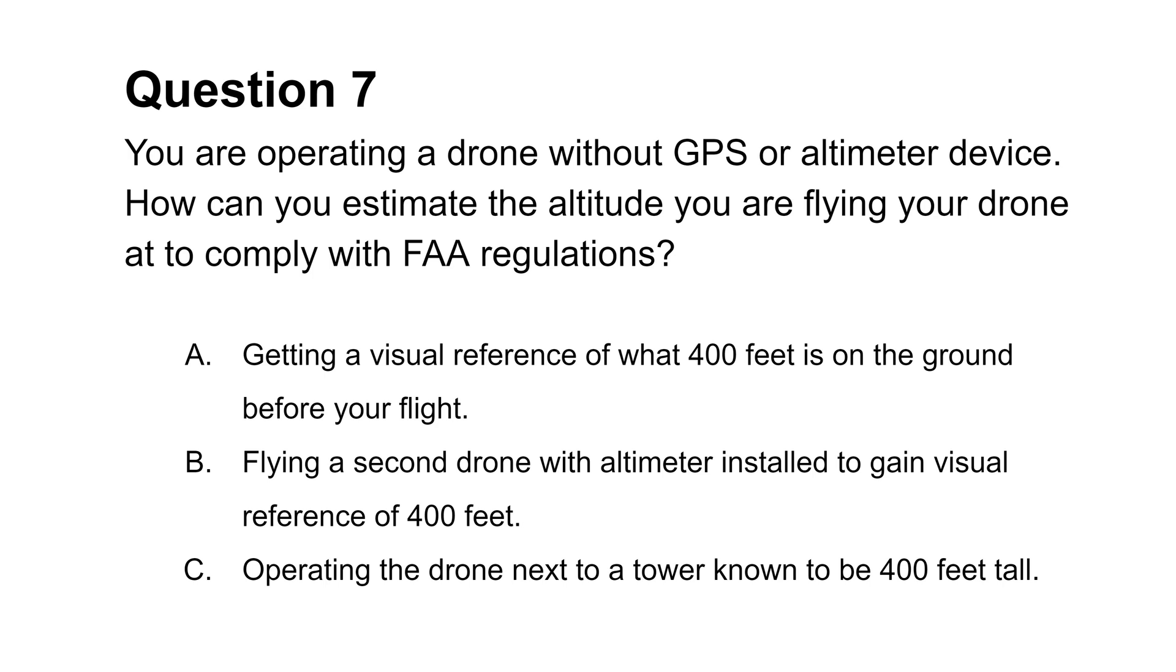The seventh final question wants to know how you can identify the required 400 feet altitude. Choice B is incorrect. Per FAA regulations, remote pilots can operate only one drone at a time. Choice C is incorrect too. While towers can indeed provide height references, they have guy wires around them. The FAA recommends flying at least 2000 feet away from guy wires for strike avoidance purposes. This will likely prevent you from getting the visual reference of what 400 feet looks like near towers. At the same time, you can gain a visual reference of 400 feet by pacing near your launch site. This makes choice A the answer to this question.